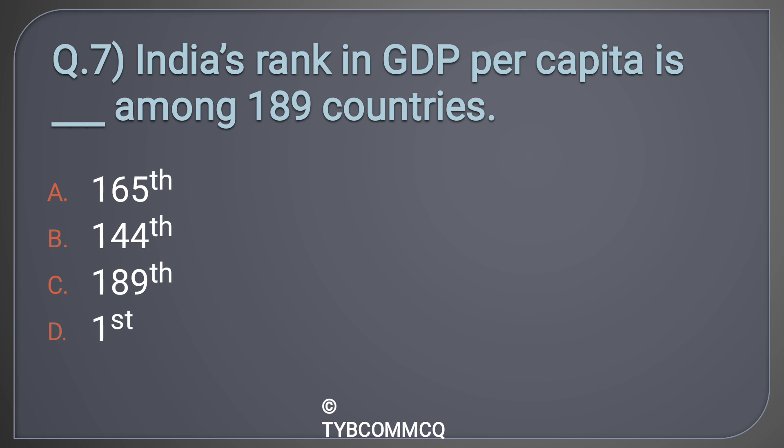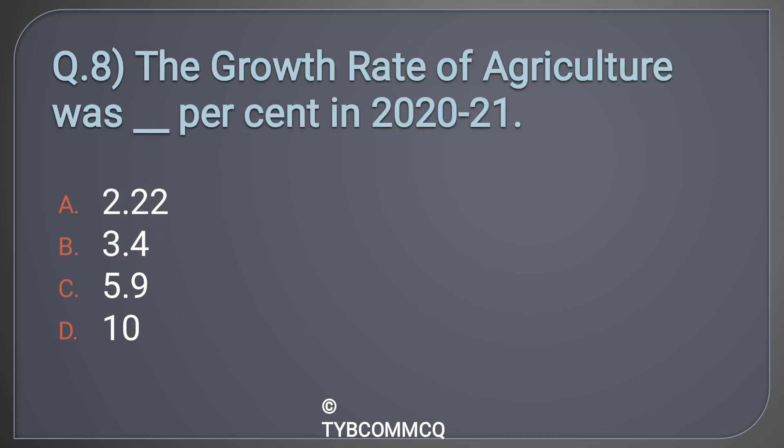Question number seven: The correct answer is Option B: 144th. Question number eight: The growth rate of agriculture was ___ percent in 2020-21.